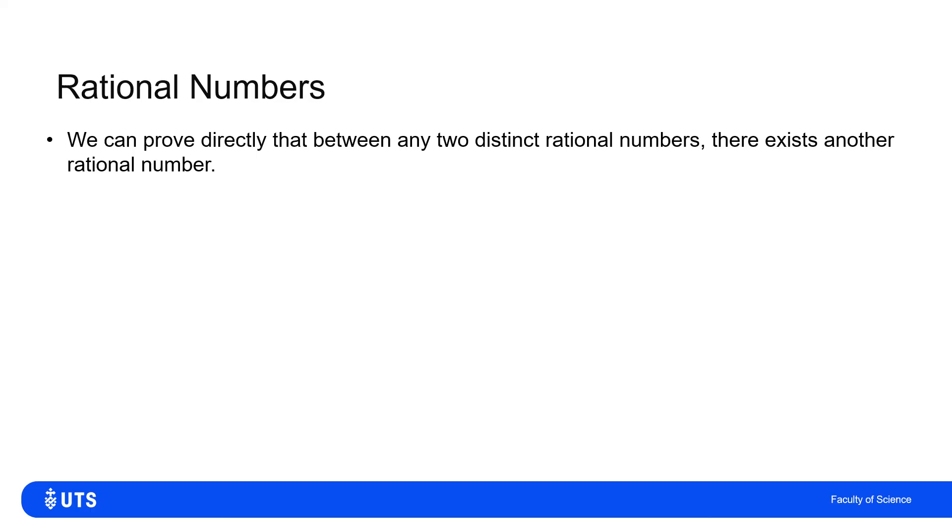Now, I can prove directly, not by contradiction, but I can prove directly that between any two distinct, two different rational numbers, there is another rational number. So this shows that there will be infinitely many rational numbers and infinitely many rational numbers between any two rational numbers.